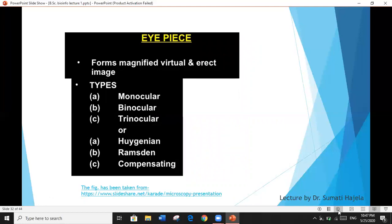Eyepiece forms magnified, virtual, and erect image. It can be monocular or binocular or trinocular. Another classification may be Huygenian eyepiece, Ramsden eyepiece, and compensating eyepiece.